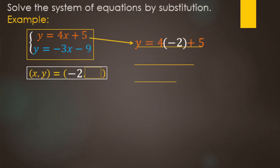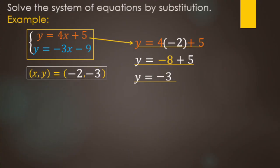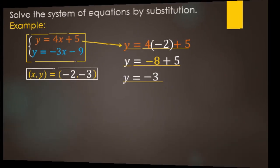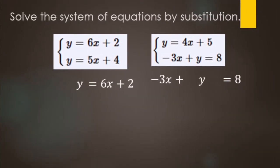We replace x with negative 2 and use order of operations: 4 times negative 2 makes negative 8, plus 5 gives negative 3. So the y value is negative 3, and our ordered pair solution that makes both equations true is (negative 2, negative 3). There are two basic styles of substitution: one where both equations say y equals, and one where just one variable is isolated.